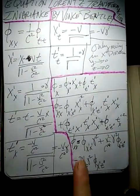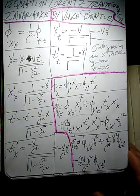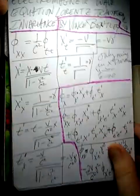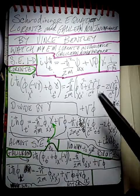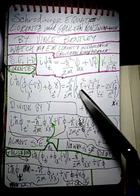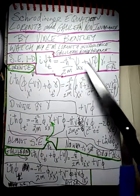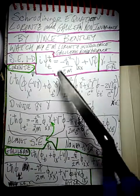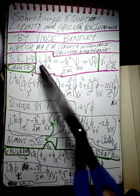So we substituted for psi_xx that expression — phi_{x'x'} gamma squared plus v squared gamma squared over c to the fourth times phi_{t't'} minus 2v gamma squared over c squared times phi_{x't'} — plus the potential energy times psi. There's the i h-bar on both sides. The only remaining thing is to find psi_t.